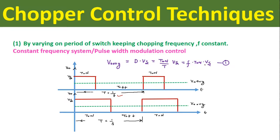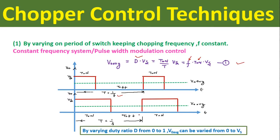From equation one we can see that to vary the duty ratio we must vary either the frequency or the on period of the switch. In the constant frequency system we keep the frequency constant and vary the on period of the switch to vary the duty ratio. By varying the duty ratio from 0 to 1 we can vary the average output voltage from 0 to Vs, where Vs is the DC input voltage.